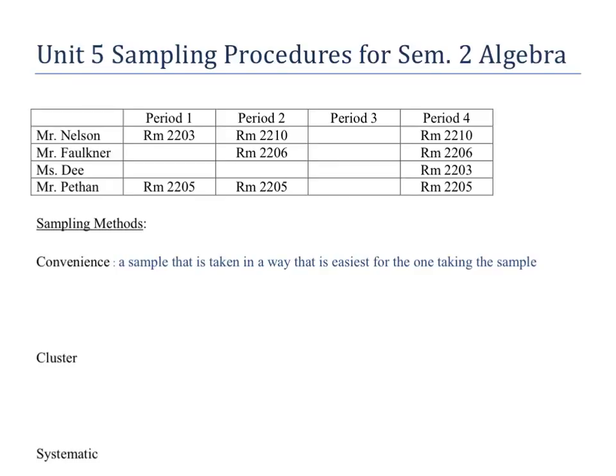A convenience sample is, as it sounds, a sample that is taken in a way that is easiest for the one taking the sample. Unfortunately, this is the way most samples are taken, and it is more inaccurate than most. It has a bias — a typical survey would be to survey your friends, which means it's not a very diverse group. You're talking to people that have similar values or beliefs that you have, so it's not a very random survey at all.